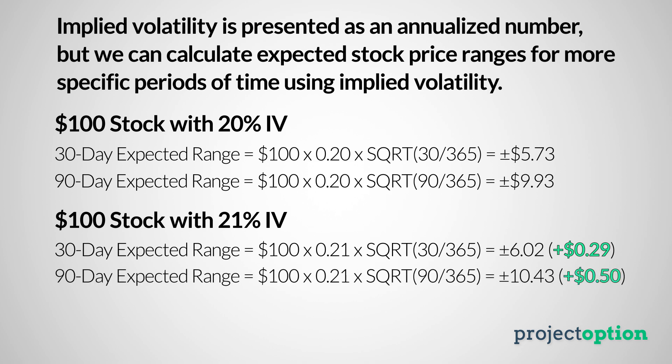If the stock's option prices increased so that implied volatility was 21%, the 30-day expected range would increase to $6.02 — an increase of $0.29 in the expected range. The 90-day expected range, however, would increase to $10.43, which is an increase of $0.50 over the initial expected range with implied volatility at 20%. From this simple calculation, we can see that an increase in implied volatility impacts the longer-term expected range more so than the shorter-term expected range, which is why longer-term options have larger vega values than shorter-term options at the same strike prices.